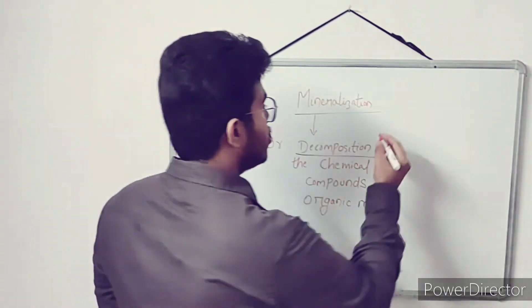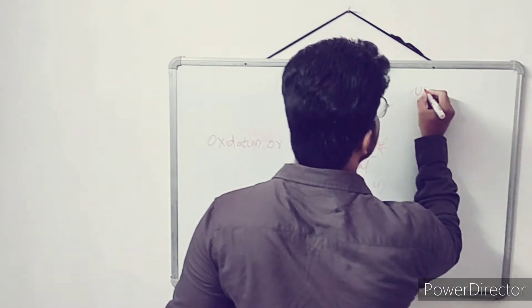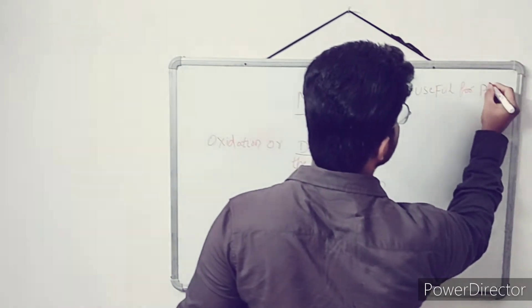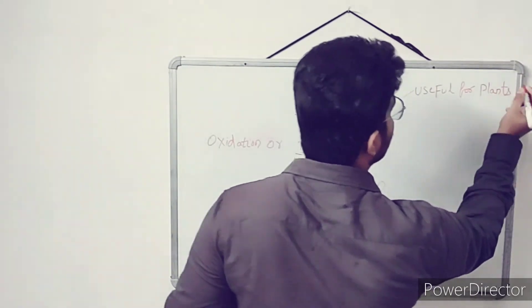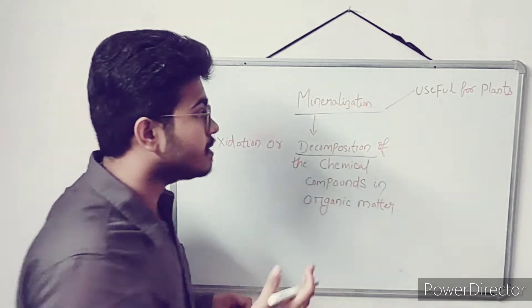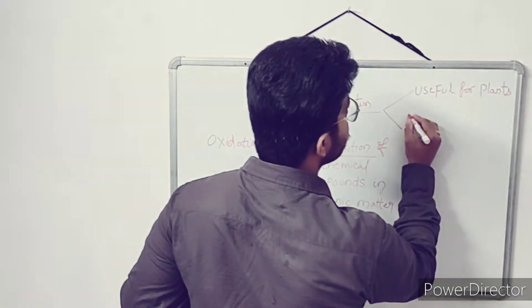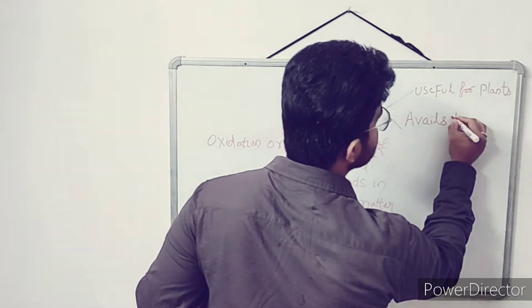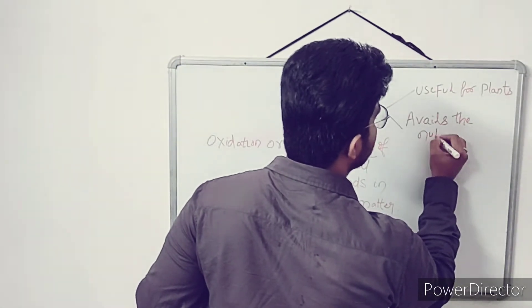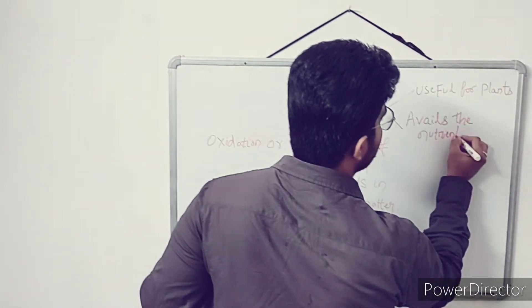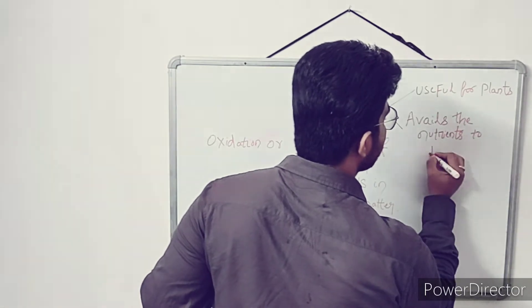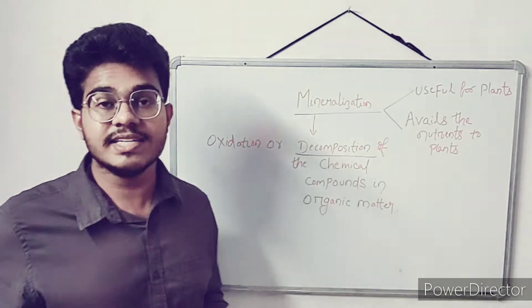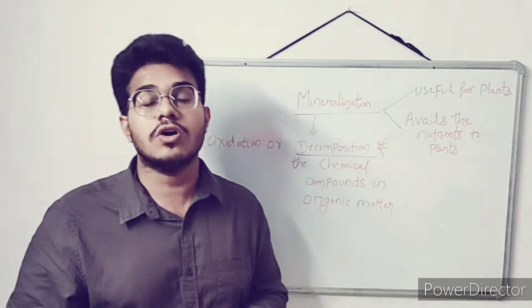So mineralization is a useful process for the plant — it is useful for plants. Why is it useful for plants? Because it makes the availability of nutrients possible. It makes nutrients available to plants. Mineralization is one of the advantageous processes of agriculture or soil science.